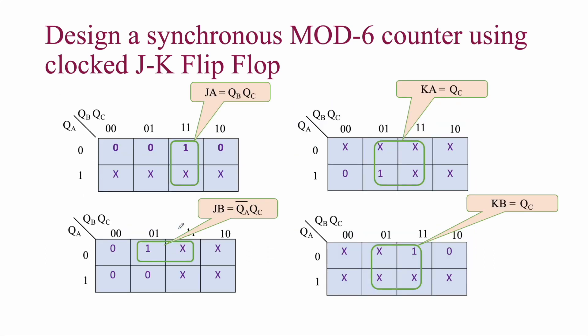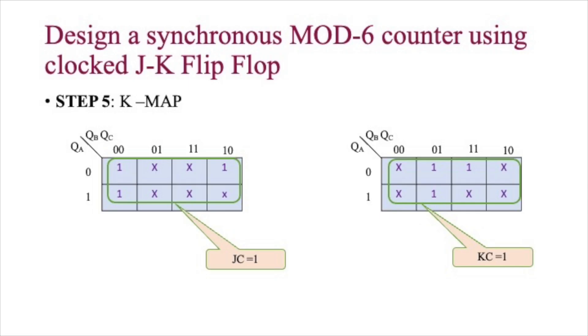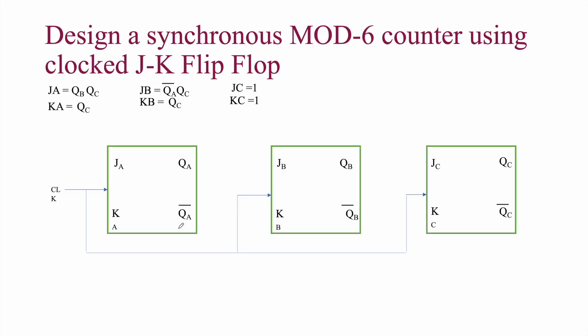The digitized K-map results for all six inputs are: JA = QB·QC, KA = QC, JB = Q̄A·QC, KB = QC, JC = 1, KC = 1. These expressions are used to draw the logic diagram.